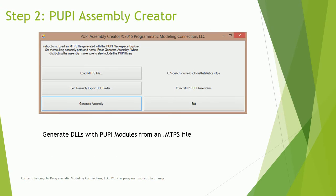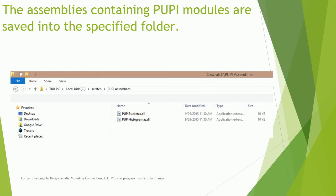The PAPI assembly creator tool loads an MTPS file and generates DLL assemblies, one for each type or class specified in the MTPS file. It places the DLL files into the specified export folder. If no errors are encountered, there will be one DLL assembly for each type found in the MTPS file.